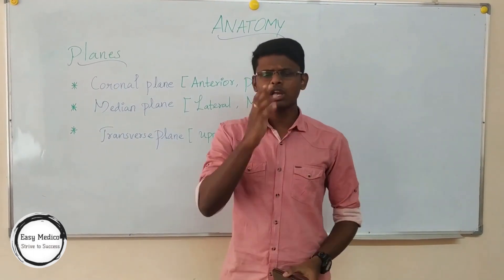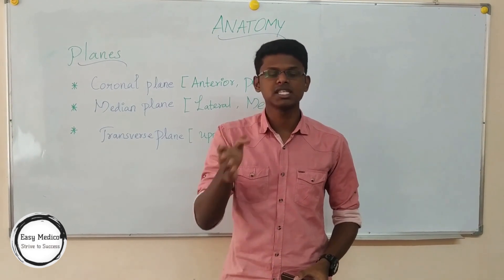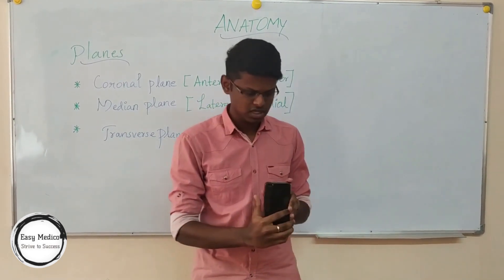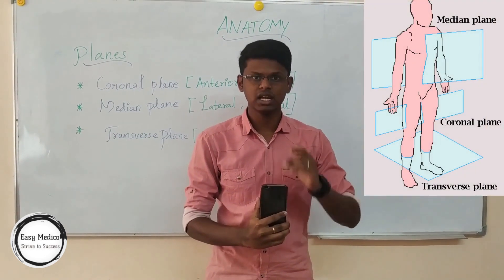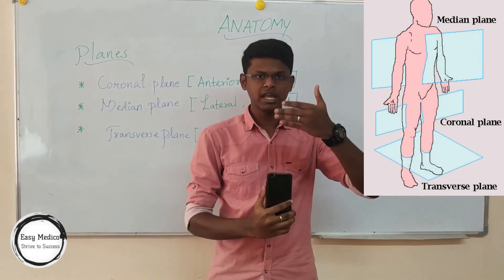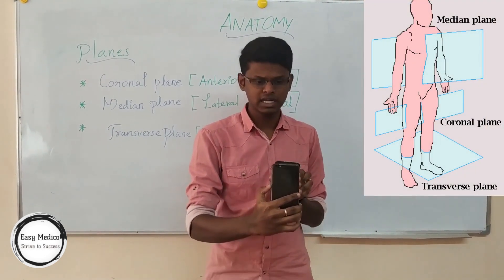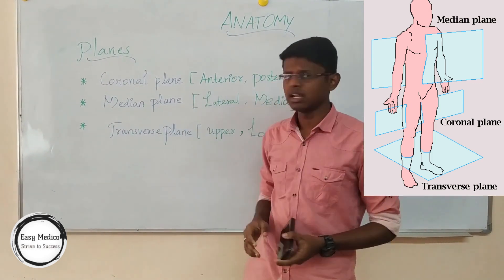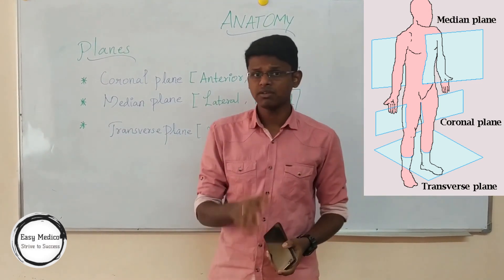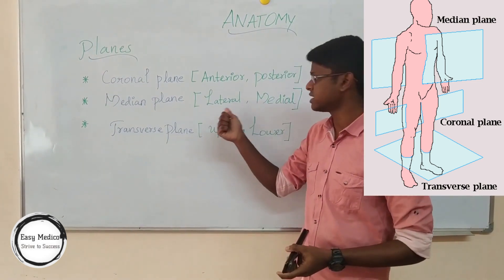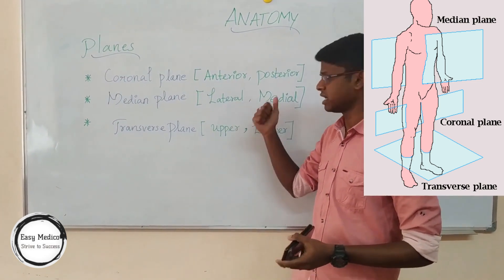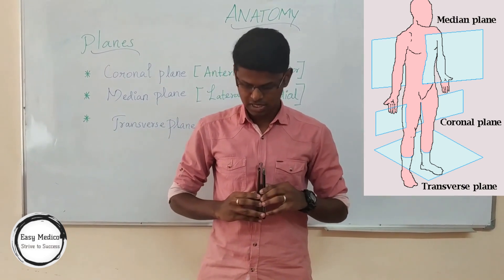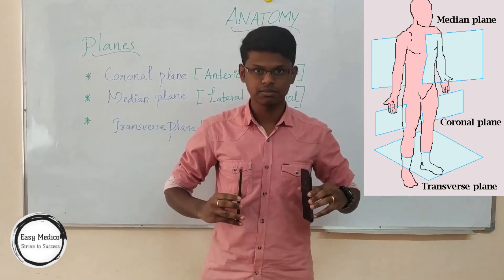First, it's the coronal plane. The coronal plane is a segment which differentiates anterior and posterior segments — imagine anterior on one side and posterior on the other; the coronal plane passes separating them. What is the median plane? When the median plane passes through, it classifies or differentiates lateral and medial segments. The medial plane passes in between, separating lateral and medial segments.